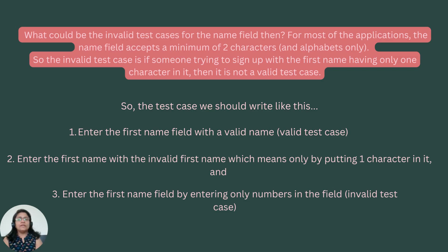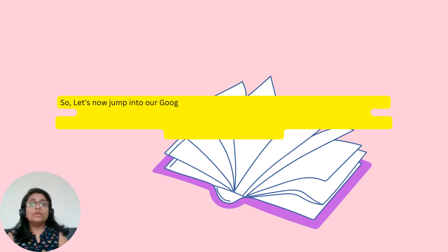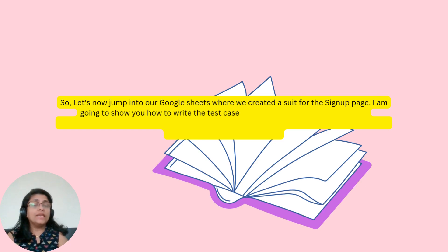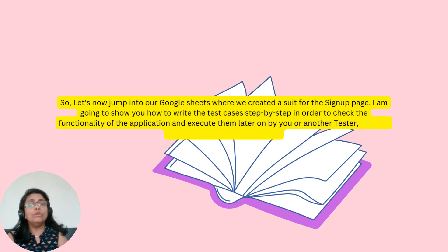The test cases we should write are: number one, enter the first name field with a valid name — that is the valid test case. Number two, enter the first name field with an invalid first name, which means only one character in it — that is the invalid test case. Number three, enter the first name field by entering only numbers — that is also an invalid test case. So let's now jump into Google Sheets where we created a suite for the signup page, and I will show you how to write the test cases step by step to check the functionality of the application. This is just for the name fields first.